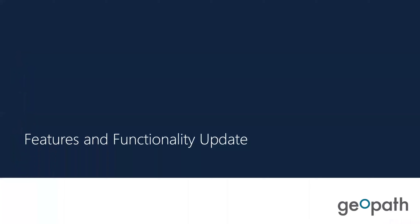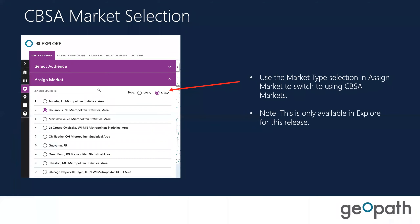Before we get to the use case, if you didn't get a chance to join the foundational session yesterday, I want to make sure everybody's aware of some of the updates to the Insights suite. One of the big changes was in the Explore module: in the defined target area, you can now pick DMA and CBSA. Previously, you were only allowed to pick a DMA. CBSA is now available, and coming in the next couple of weeks is the ability to pick counties as well.